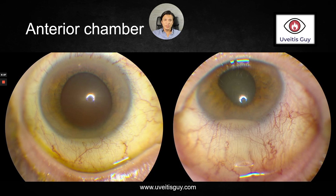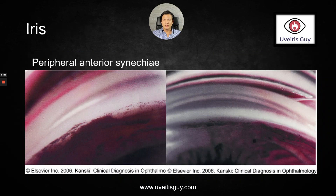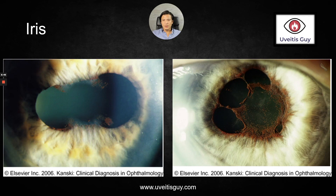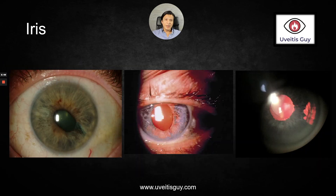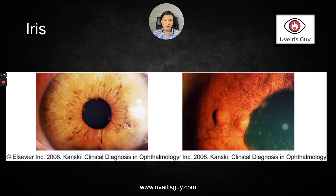Hypopion, of course, can be infectious or non-infectious. The iris: I usually also do gonioscopy in these patients to see if there is any evidence of peripheral anterior synechiae. I check for areas of posterior synechiae, for areas of atrophy or transillumination defects. Nodules can be seen with sarcoidosis, for example.